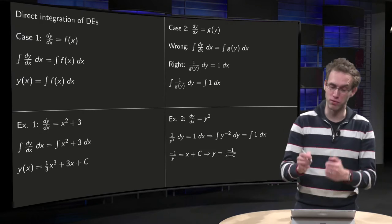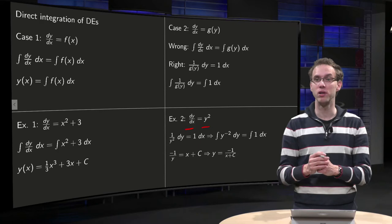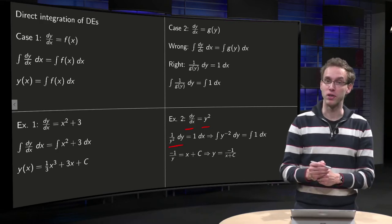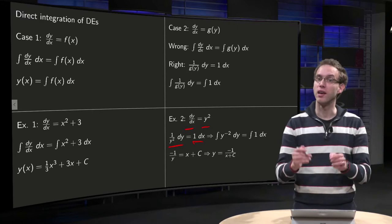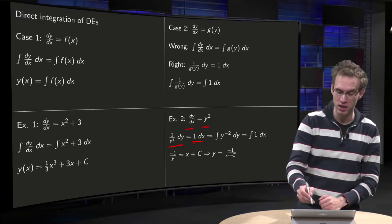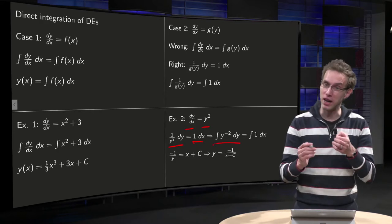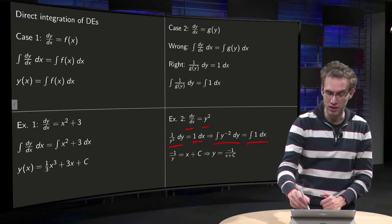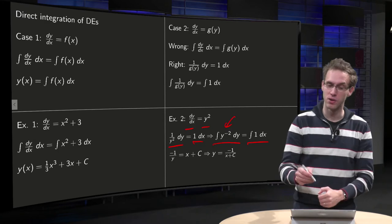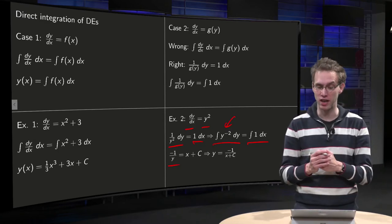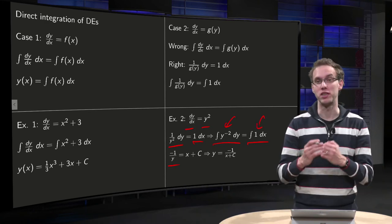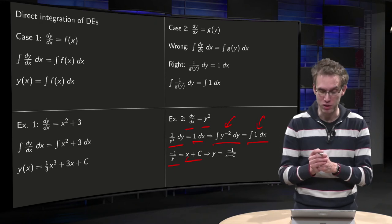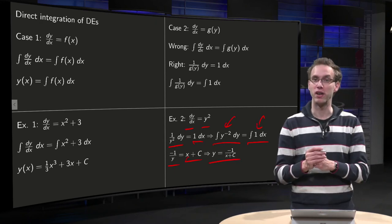How does that work in an explicit example? If we have dy/dx equals y squared, so the right-hand side only depends on y, we divide by y squared. Then we get 1 over y squared dy equals 1 times dx. Putting an integral sign on both sides gives the integral of y to the power minus 2 dy equals the integral of 1 dx. On the left-hand side, integrating y to the minus 2 yields y to the minus 1 with an additional minus sign. On the right-hand side, integrating 1 with respect to x yields x plus C. So we have minus 1 over y equals x plus C, and solving for y gives y equals minus 1 over (x plus C).